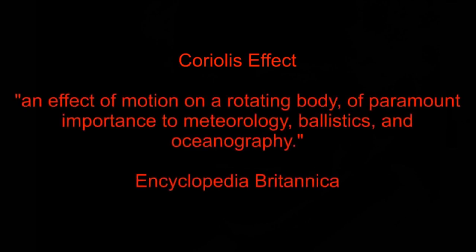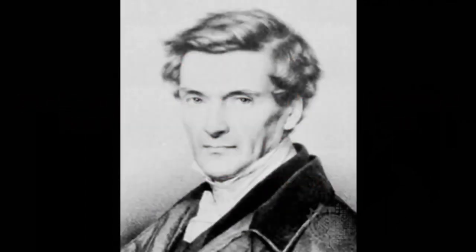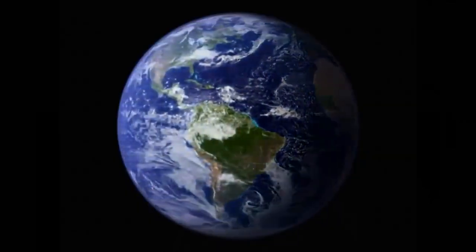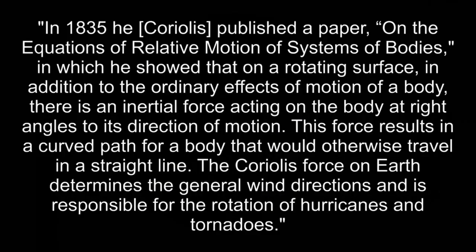The Encyclopedia Britannica states that the Coriolis Effect is an effect of motion on a rotating body of paramount importance to meteorology, ballistics, and oceanography. The Encyclopedia Britannica further explains the Coriolis Effect as it pertains to the supposedly spinning spherical Earth.